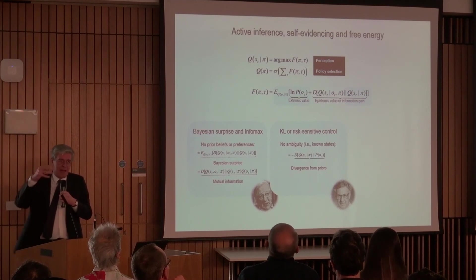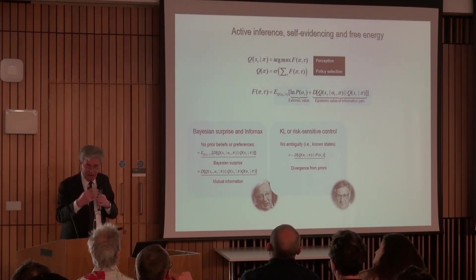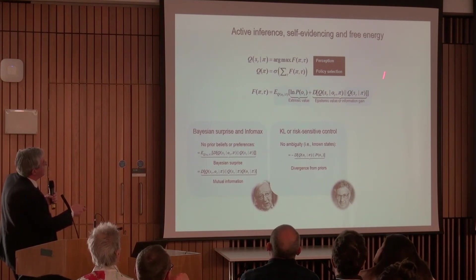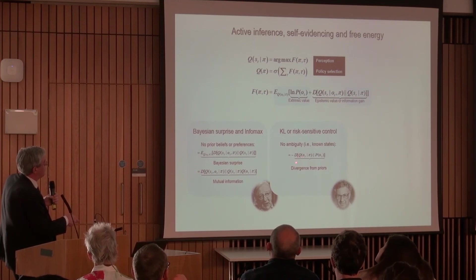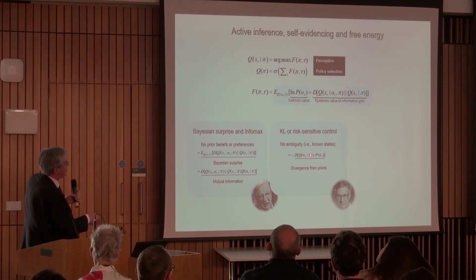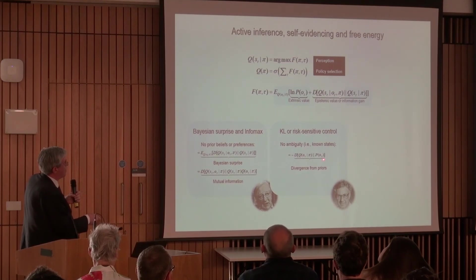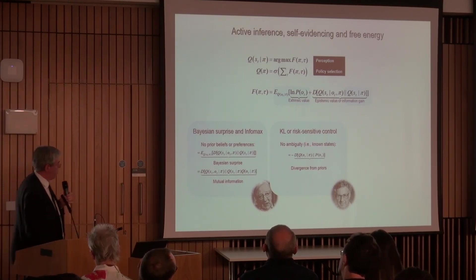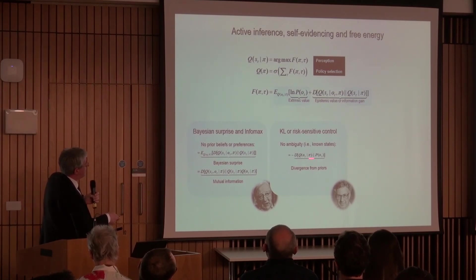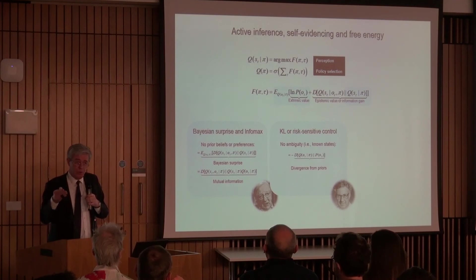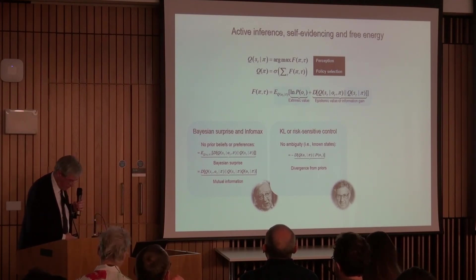Let me go through the special cases. The intrinsic or epistemic value — information gain — written as an expectation of a divergence between a posterior and a prior, corresponds to Bayesian surprise, used by people like Itti and Christof Koch to describe saccadic searches of our environment. This expectation is the mutual information between hidden states of the world and the associated outcomes under a particular policy — fitting comfortably with Horace Barlow's assertion about maximising mutual information: the principle of minimum redundancy, the InfoMax principle by Ralph Linsker. If you take out the uncertainty about hidden states and just have prior preferences, in optimal control that becomes KL control — a KL Kullback-Leibler divergence — used instead of reinforcement learning to accommodate risk in plank control.